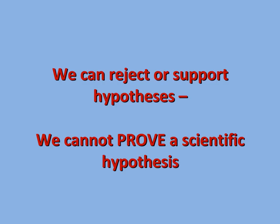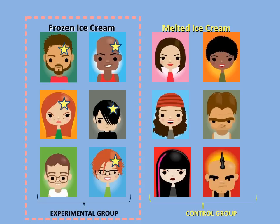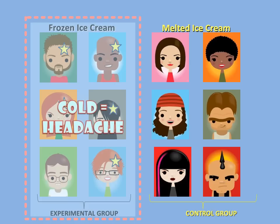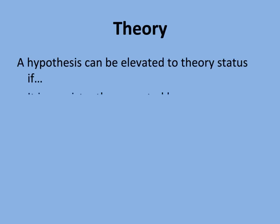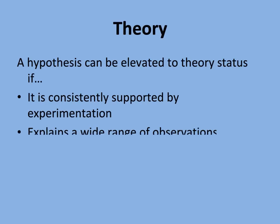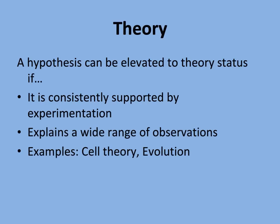But the more tests we perform, the more certain we can be about our hypothesis. Since such a large percentage of our experimental group got headaches, this supports our hypothesis that the headache is linked to the temperature of the frozen ice cream. The more experiments we perform that support our hypothesis, the more certain we are that those brain freeze headaches are linked to the temperature of the frozen ice cream. The more a hypothesis is supported, the more certain we are that it is true, and a hypothesis can be elevated to theory status. There are a few theories in biology, but the best known are the cell theory and the theory of evolution.